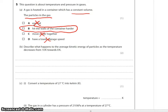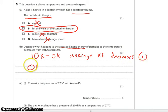Describe what happens to the average kinetic energy of particles as the temperature decreases from 10 Kelvin towards 0 Kelvin. So as we go from 10 Kelvin towards 0 Kelvin, we're going to describe what happens to the average kinetic energy. Well the average kinetic energy decreases. One mark. And then at 0 Kelvin, there is no kinetic energy or no motion at all. Second mark.